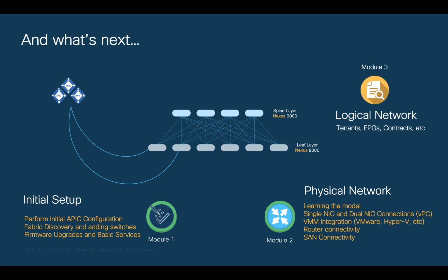In the next module, we will learn how we want to define communication between different endpoints by configuring the logical network and using things like tenants, EPGs, contracts, and so on. But before we do that, I would like to close this module by sharing a few best practices that may help you as you perform the access policies configuration tasks.